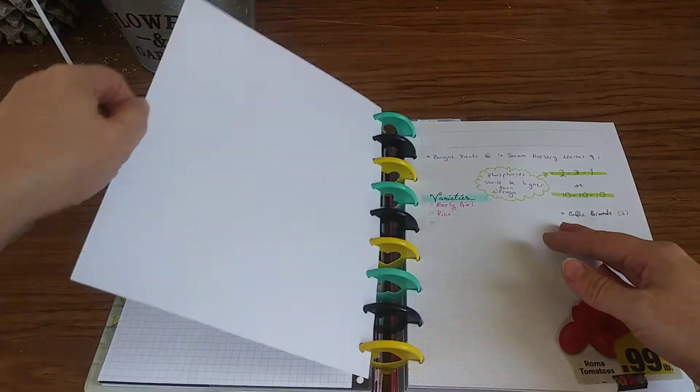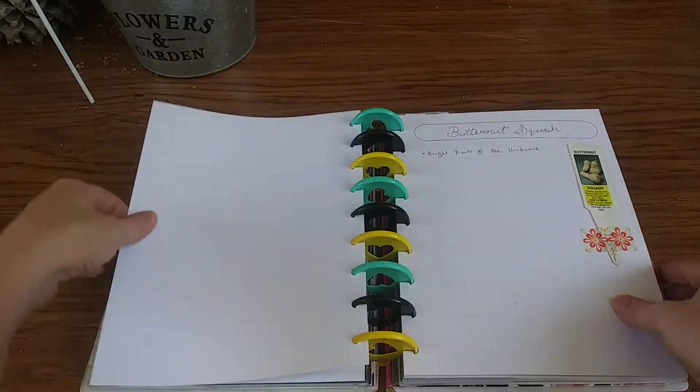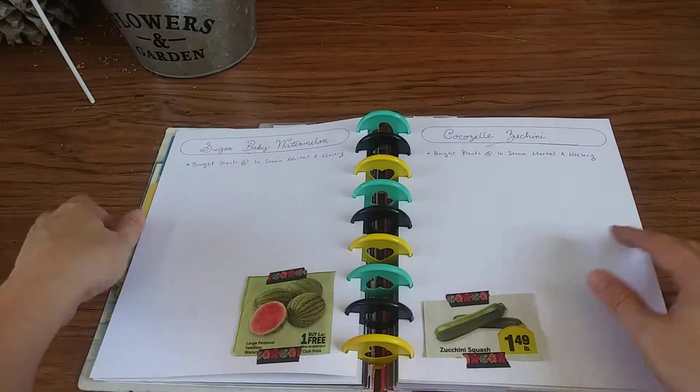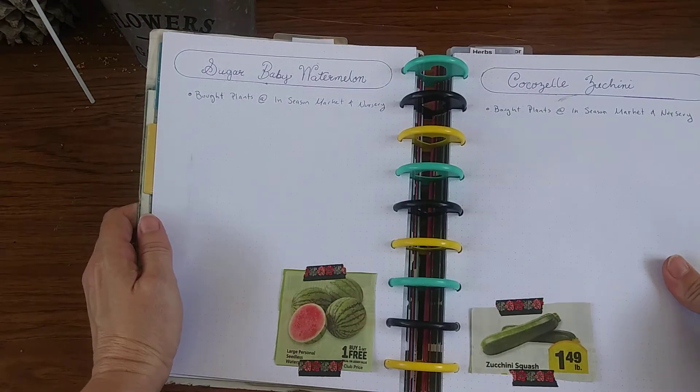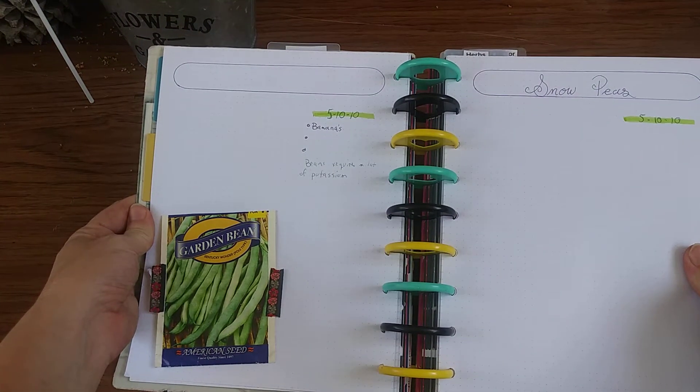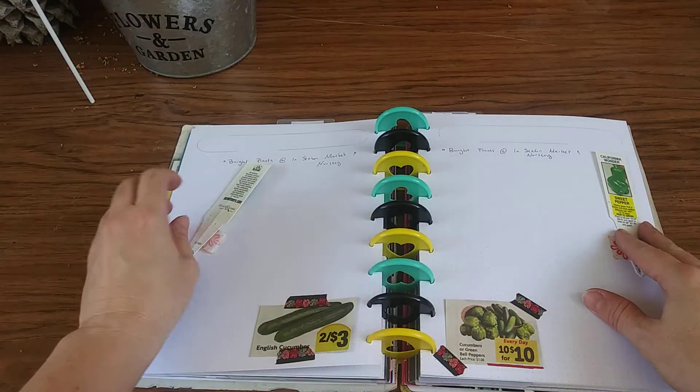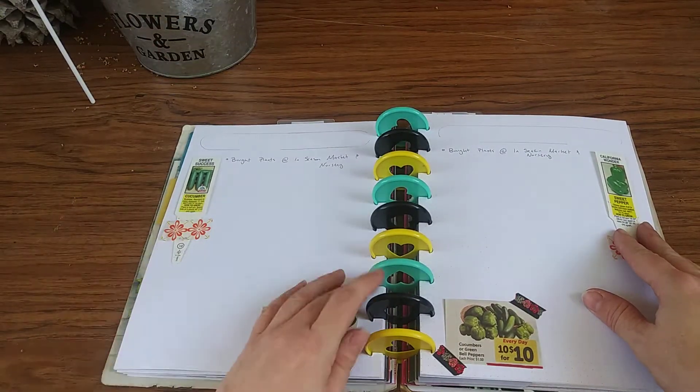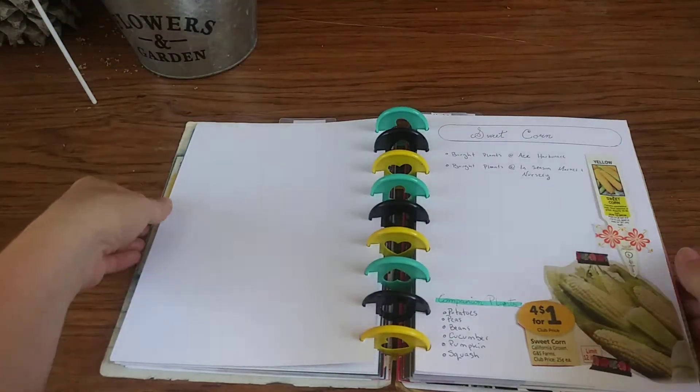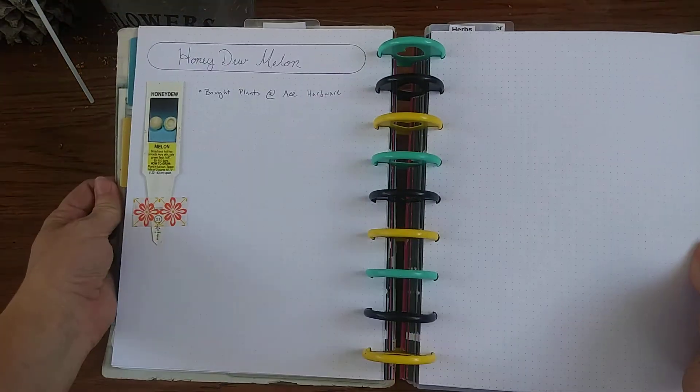That's just some notes I took on tomatoes, butternut squash, watermelon and zucchini, pole beans and snow peas which failed epically but you know, gonna take my notes, cucumbers and bell peppers, sweet corn, honeydew melon.